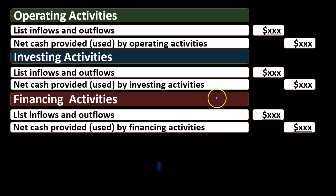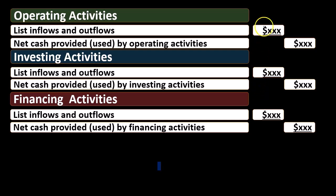Then we have financing activities — the same concept of listing inflows and outflows — followed by net cash provided or used by financing activities. Our major goal when analyzing the cash flow statement is to determine which of these three categories a cash flow belongs to: operating, investing, or financing. We will go through a thought process in a later presentation on how to best determine the correct classification.